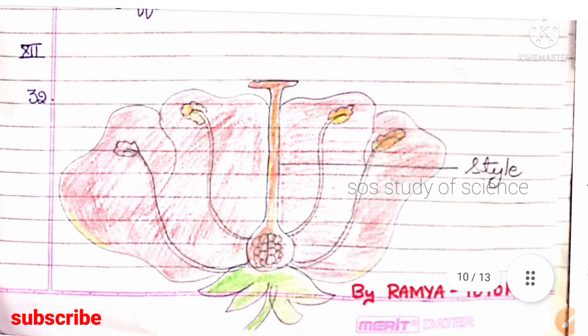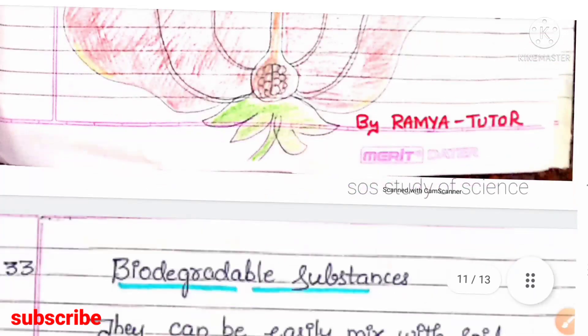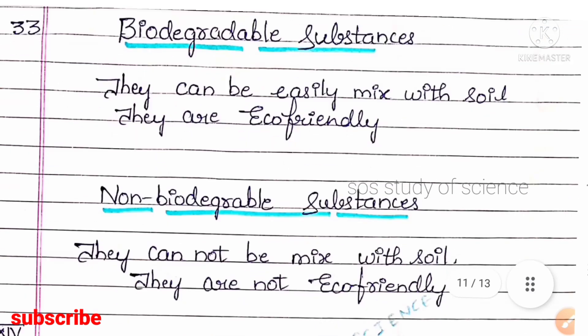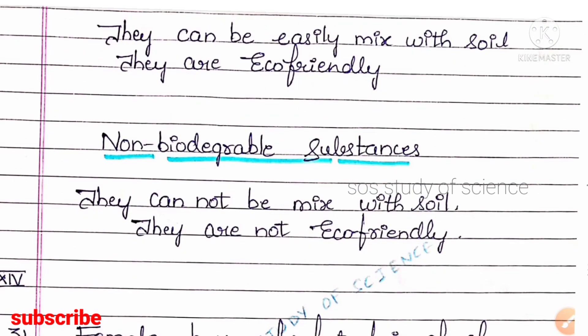Question 32 asks you to draw the diagram showing the longitudinal section of a flower and label the style. Question 33 asks for differences between biodegradable and non-biodegradable substances. Biodegradable substances can easily mix with the soil and are eco-friendly; non-biodegradable substances cannot be mixed with the soil and are not eco-friendly.